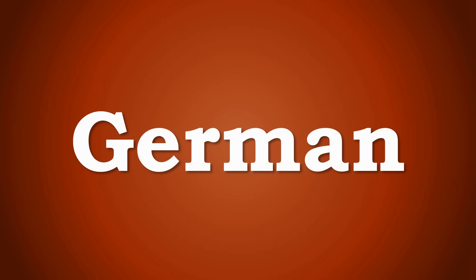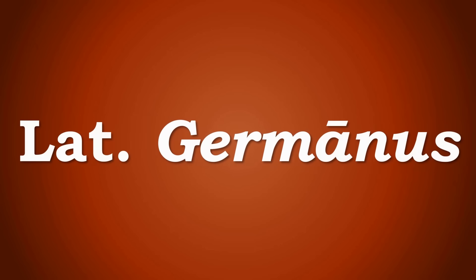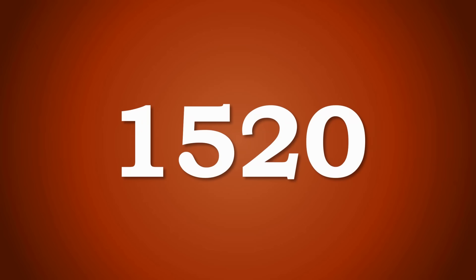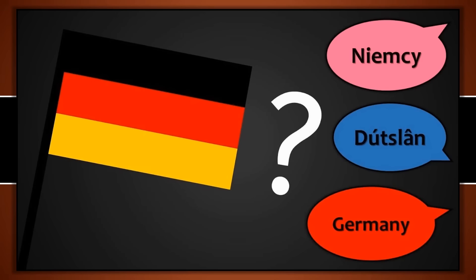So the term Dutch starts to get a more specific meaning towards the people and the language from specifically the Netherlands or the Dutch Republic. Around the same time we get the introduction of the word German into English, which then also gets a more specific meaning referring to people not from the Netherlands but from areas of Germany. This actually comes from the Latin term Germanus, which comes from Germania — how the Romans referred to the area where the Germanic tribes were living. This becomes a learned borrowing into English, probably from ecclesiastical Latin, and we find the first use of German in English in 1520.